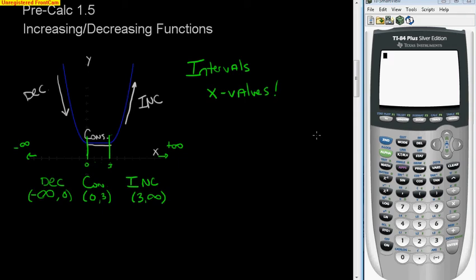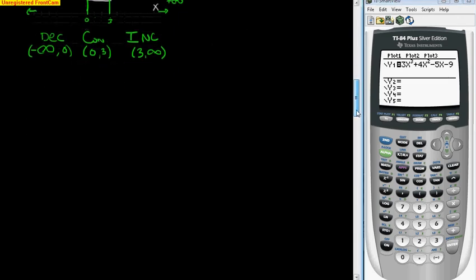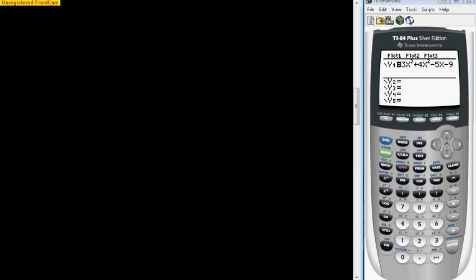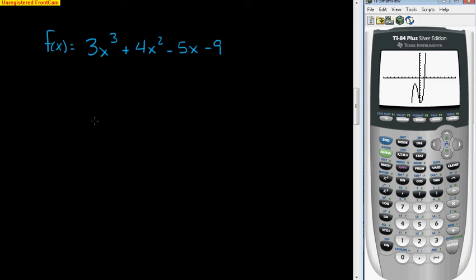So I have my calculator over here, and as you can see, if I go to my y equals screen, I already have the function put in there. So I'm going to have the function f(x) is 3x cubed plus 4x squared minus 5x and minus 9. And we go ahead and graph it, and we can see here that the graph, and obviously I'm just kind of going to go back here for a second.